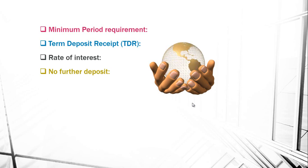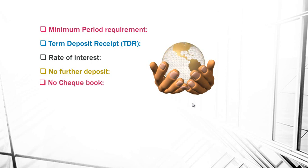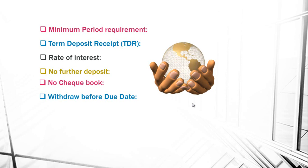Next is no further deposits: the account holder cannot deposit a further amount in the same account; he has to open a new account for further deposits. Next is no checkbook: no checkbook is provided by the bank. Regarding withdrawal before the due date: the customer can withdraw after six months but before the date of expiry, and he gets a sharing in profit.